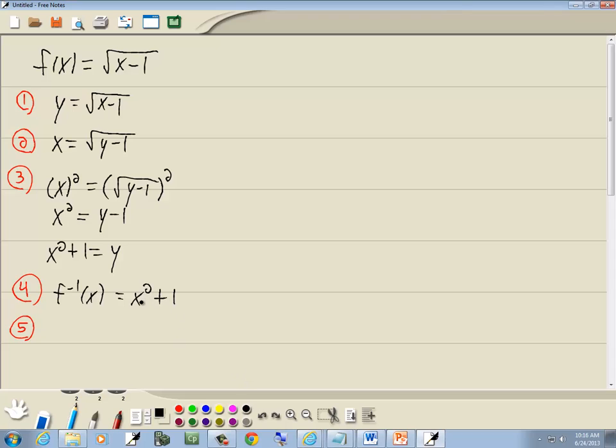What we came up with, x squared plus 1. x squared is the u-shaped graph, the parabola, and plus 1 shifts it up 1. So what we came up with is this right here. And obviously it fails the horizontal line test, so it's not 1 to 1.